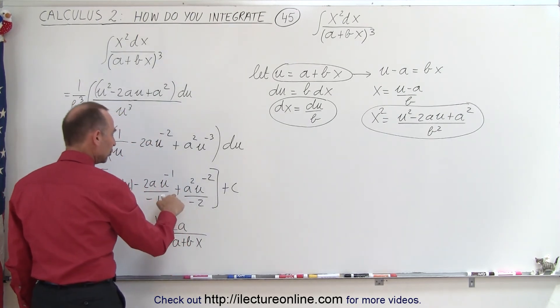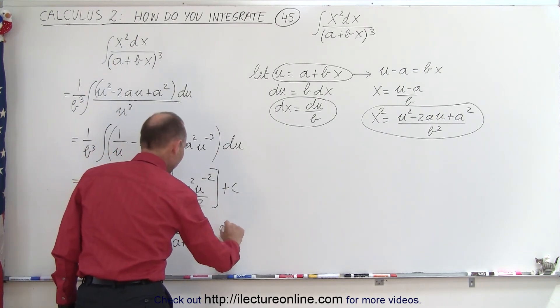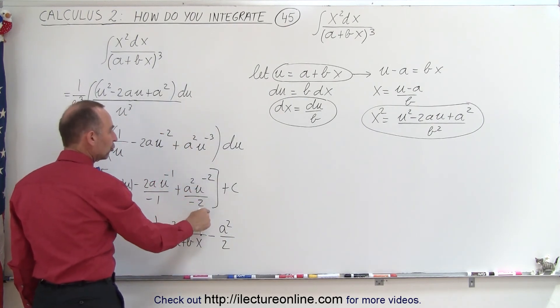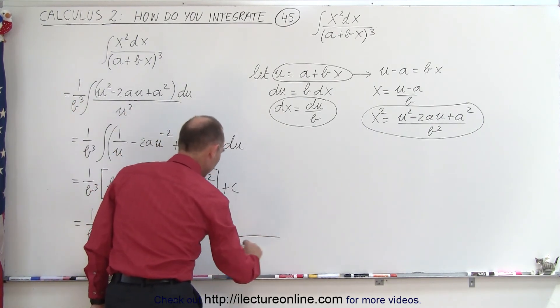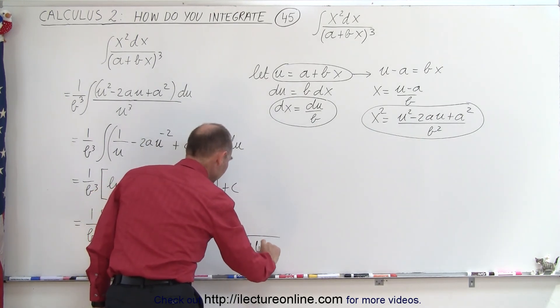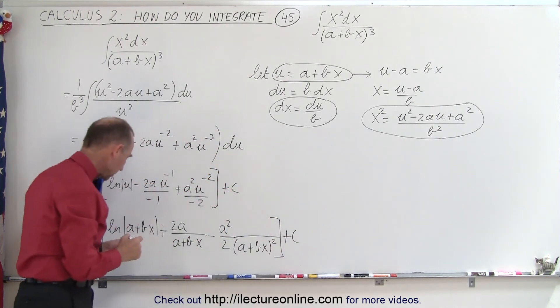And here the negative 2 applies here, that becomes negative a squared over 2, and we have a 1 over u squared, that becomes u then becomes a plus bx, so a plus bx to the second power, and a constant of integration.